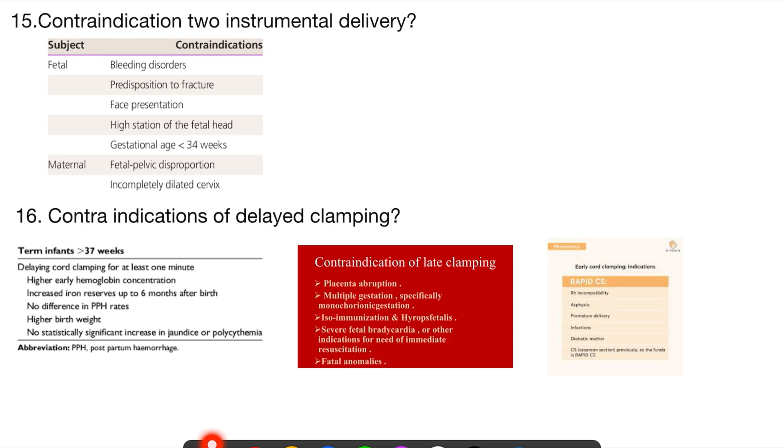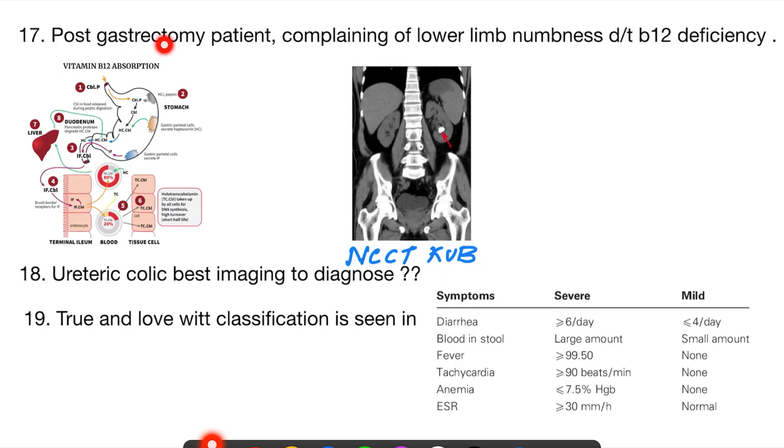And where we do early cord clamping are the same causes which we have discussed right now. Rh incompatibility, premature delivery, infection—because they are not eligible for late clamping, they have to be done early cord clamping.